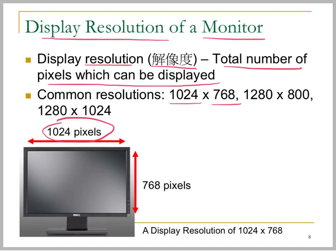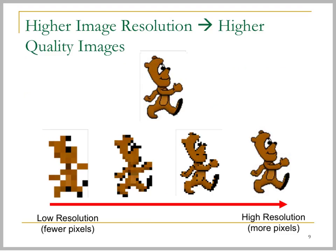Vertically there are 768 pixels on the computer screen. From this we can draw a small conclusion.